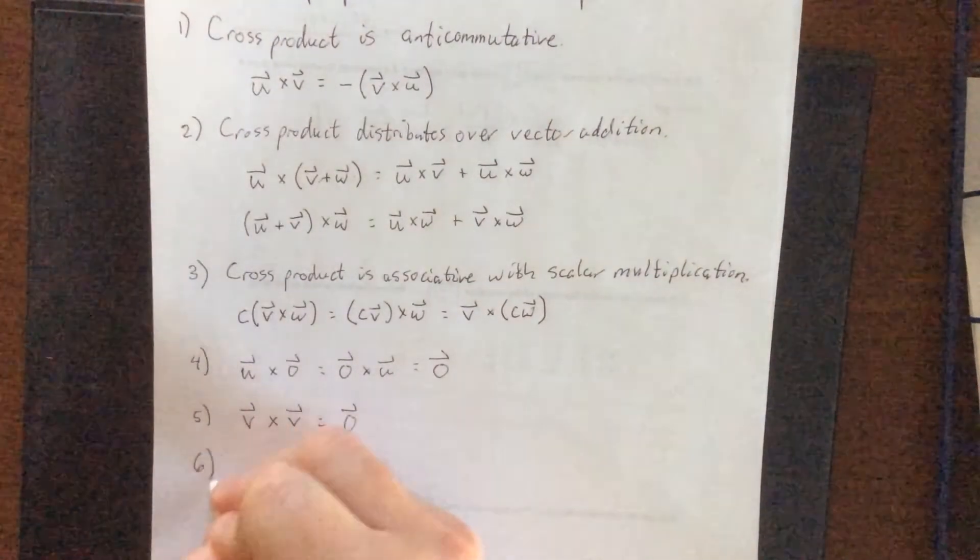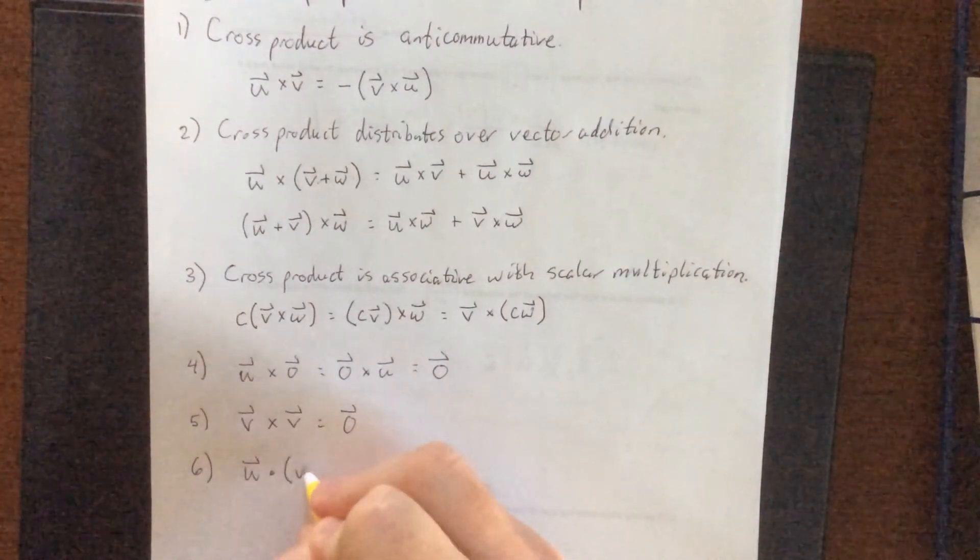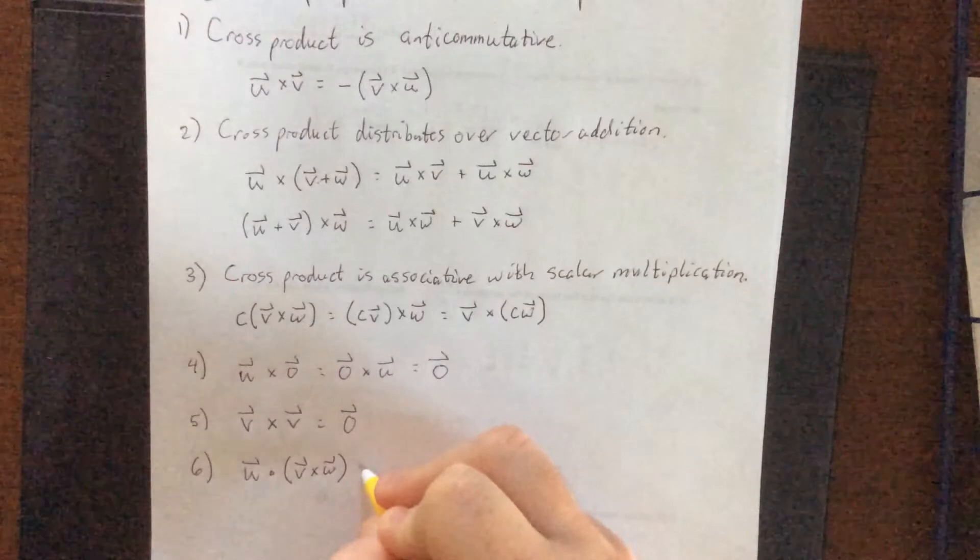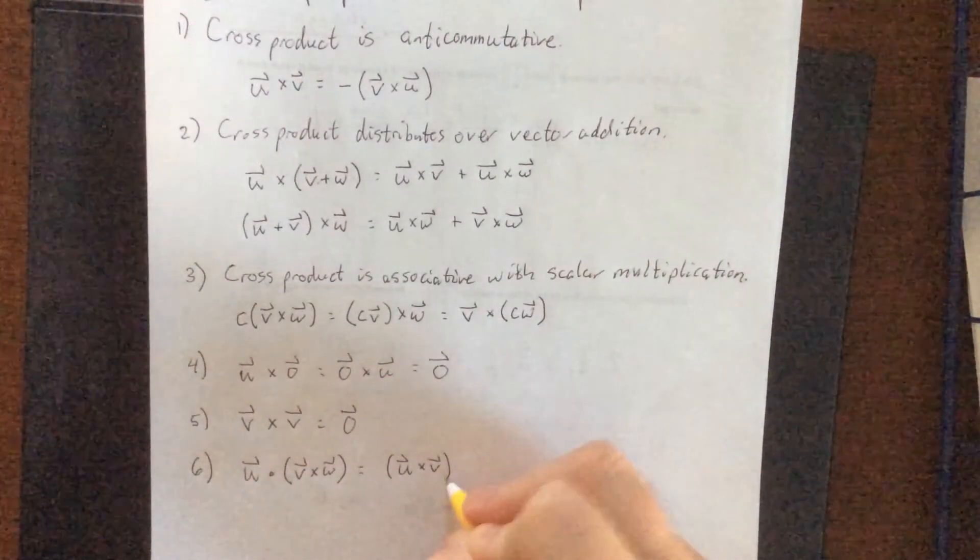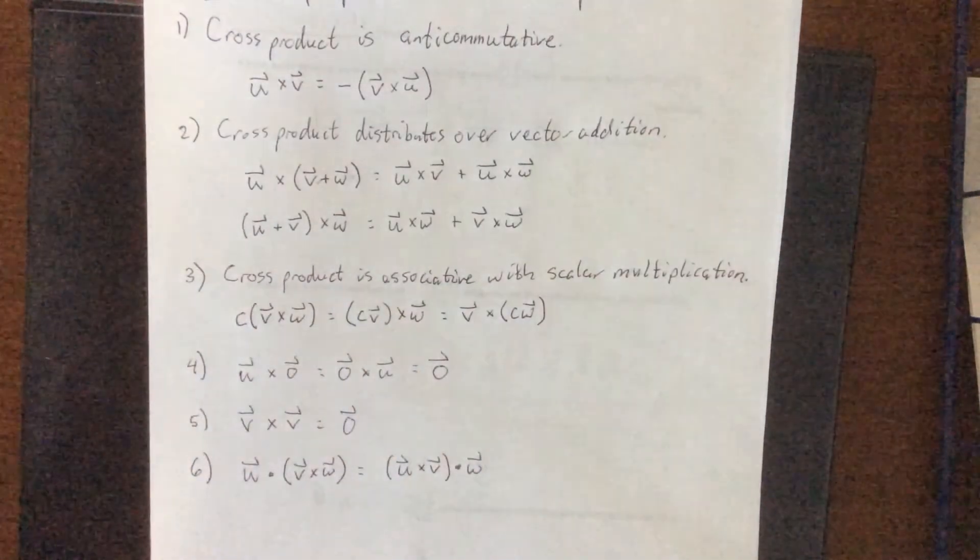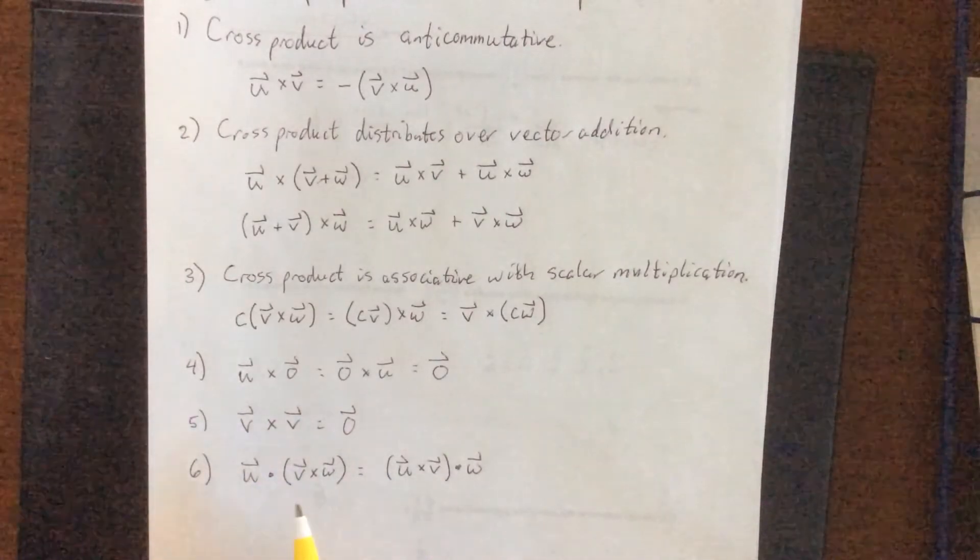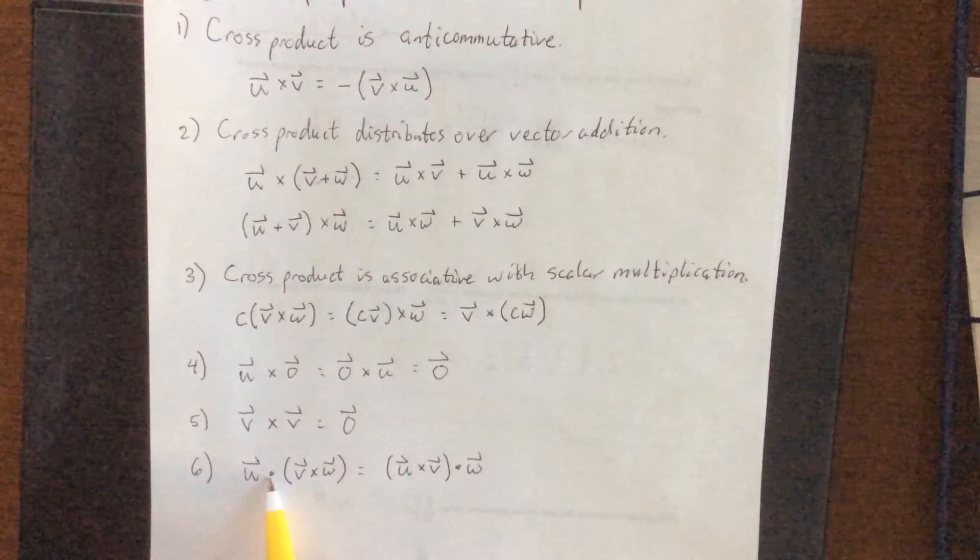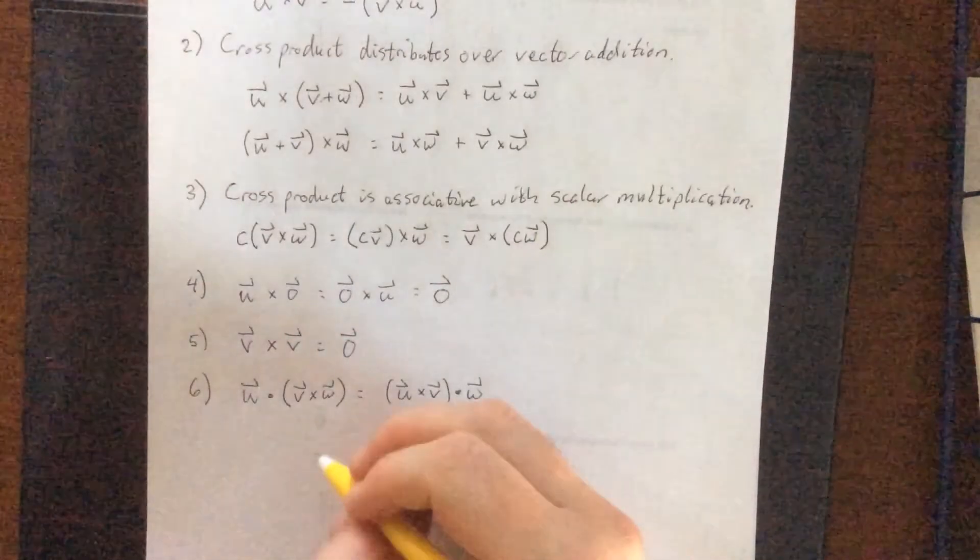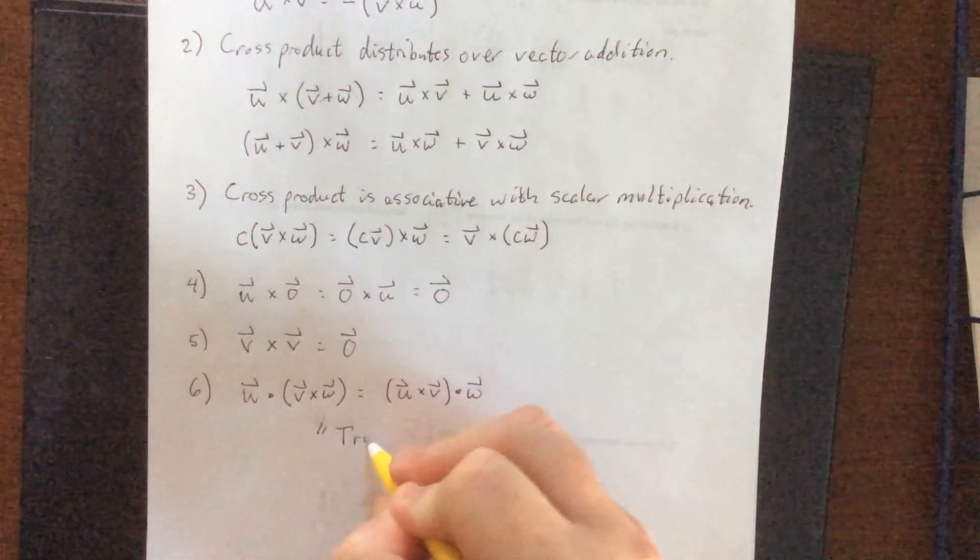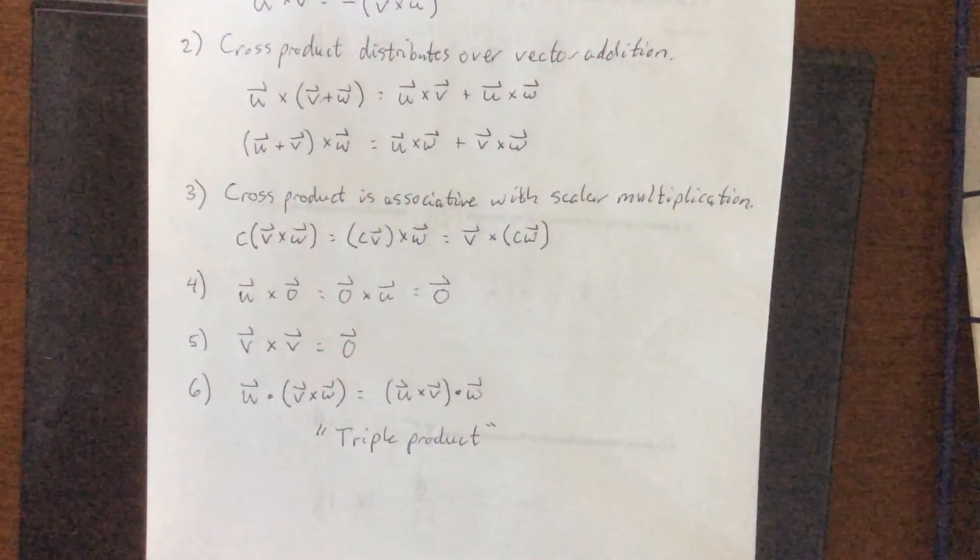And finally, we'll be introducing this one in a future video. But if I have a dot product with a cross product, I am allowed to change the order in which I'm doing the cross product and the dot product with no penalty. That is to say, retain the order u, v, w, do a cross product here then a dot product here, or a cross product here then a dot product here. This one is referred to as the triple scalar product, or simply the triple product for short. We'll be introducing the significance of that in a future video.